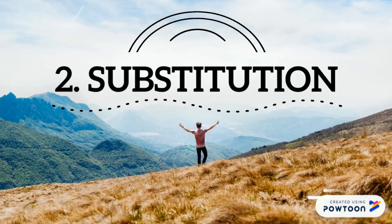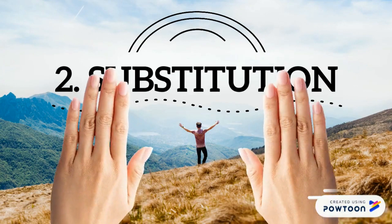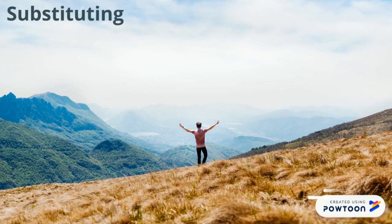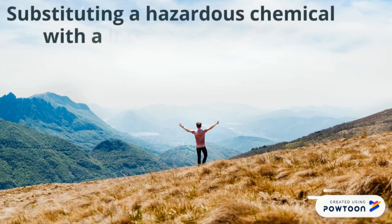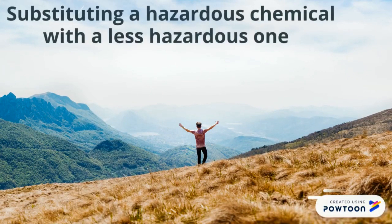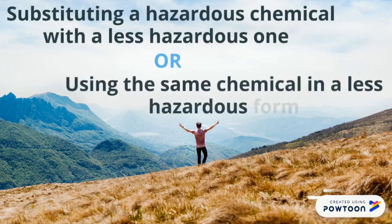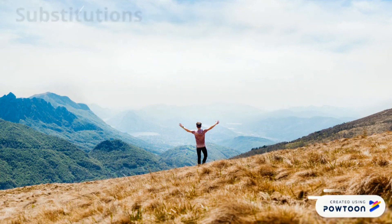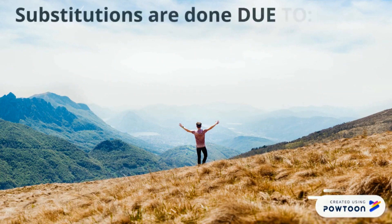Control measure 2: Substitution. This involves substituting a hazardous chemical with a less hazardous one, or using the same chemical in a less hazardous form. Substitutions are carried out due to problems with safe limits, where traditional control methods of prevention are not sufficient.